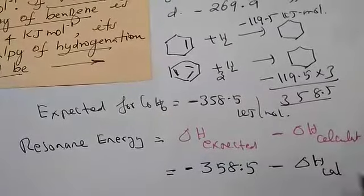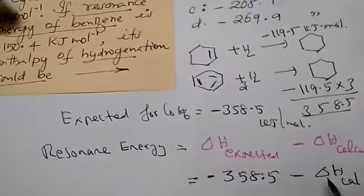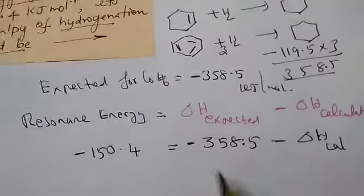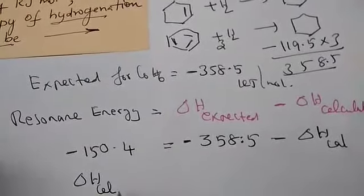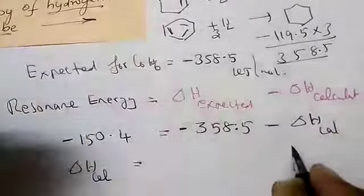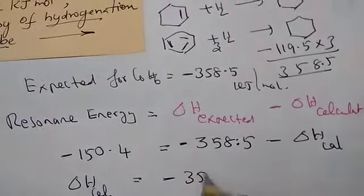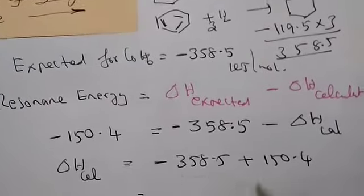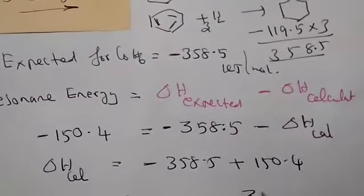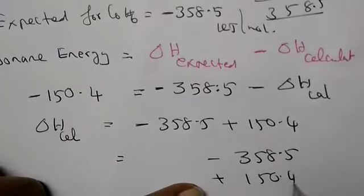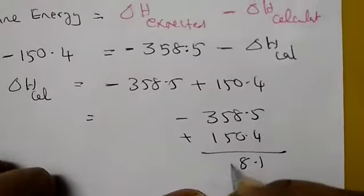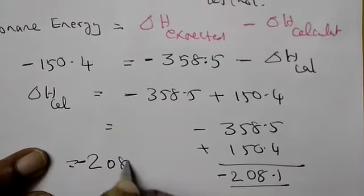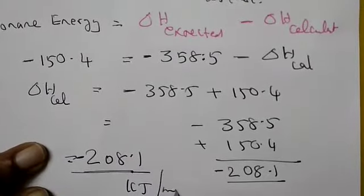Expected value is -358.5, what it should give us experimentally we have to calculate. Resonance energy is given as -150.4. You bring this one. Bring resonance energy to the other side, minus becomes plus. Your answer is the difference, -208.1 kilojoule per mole.